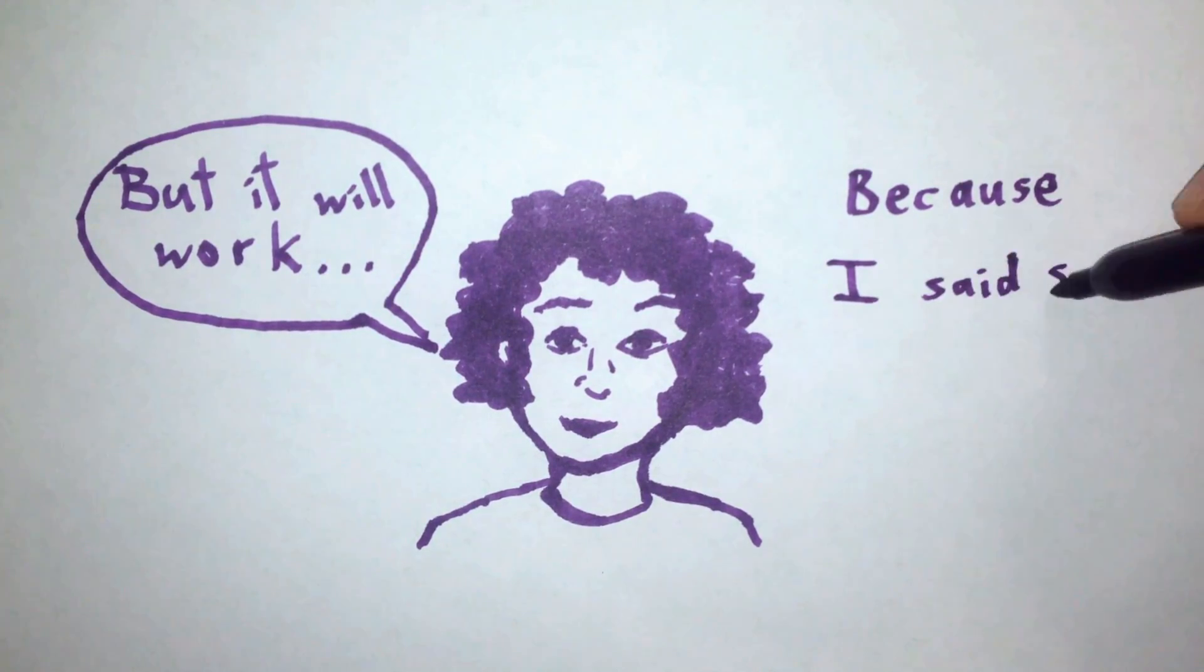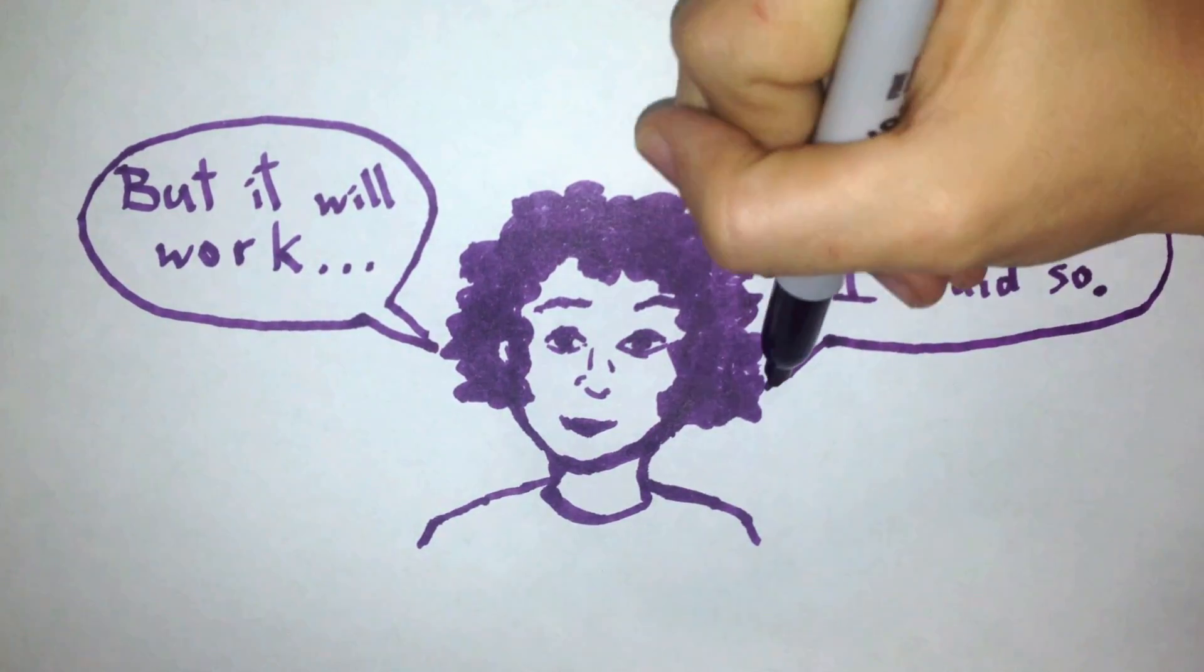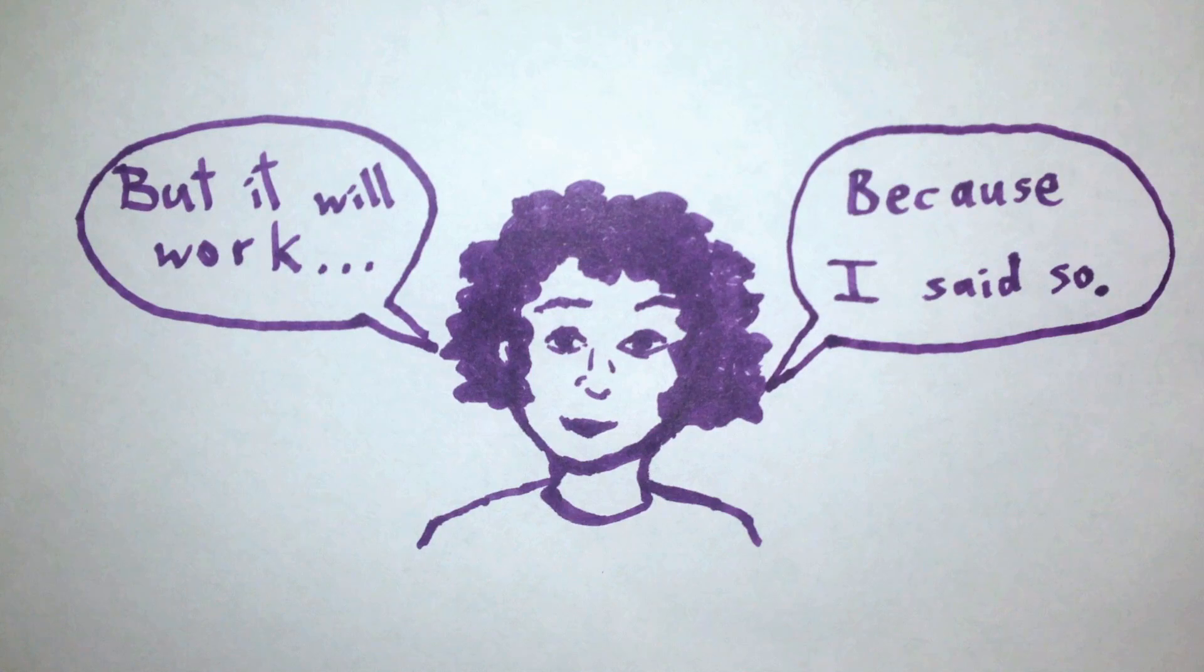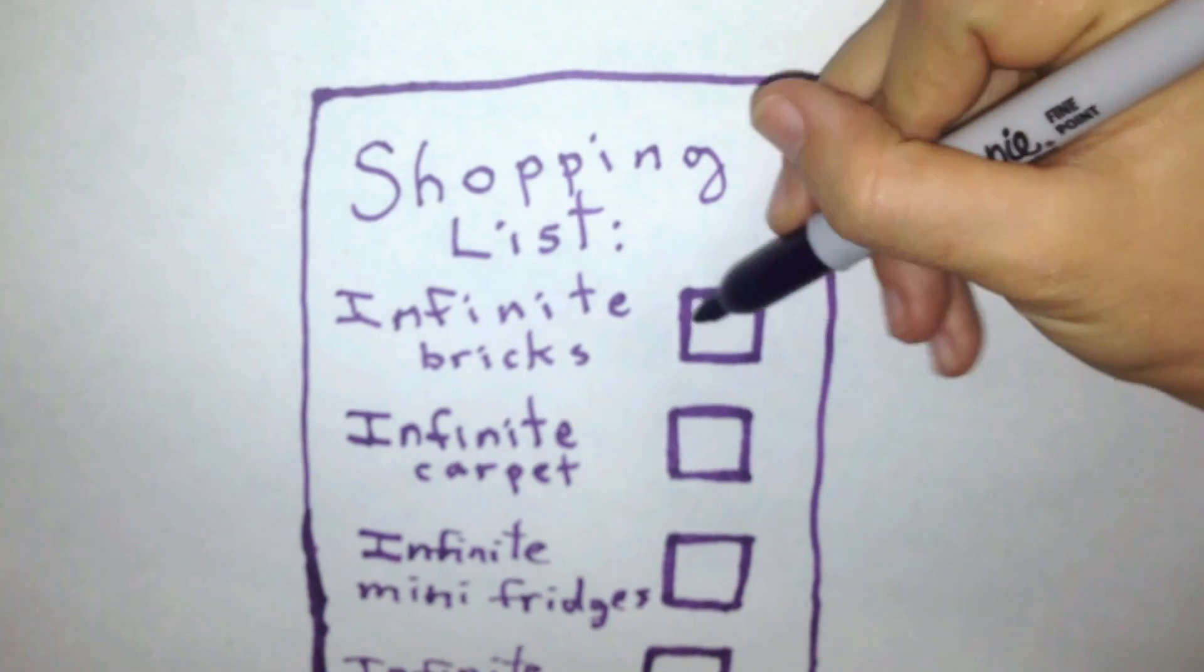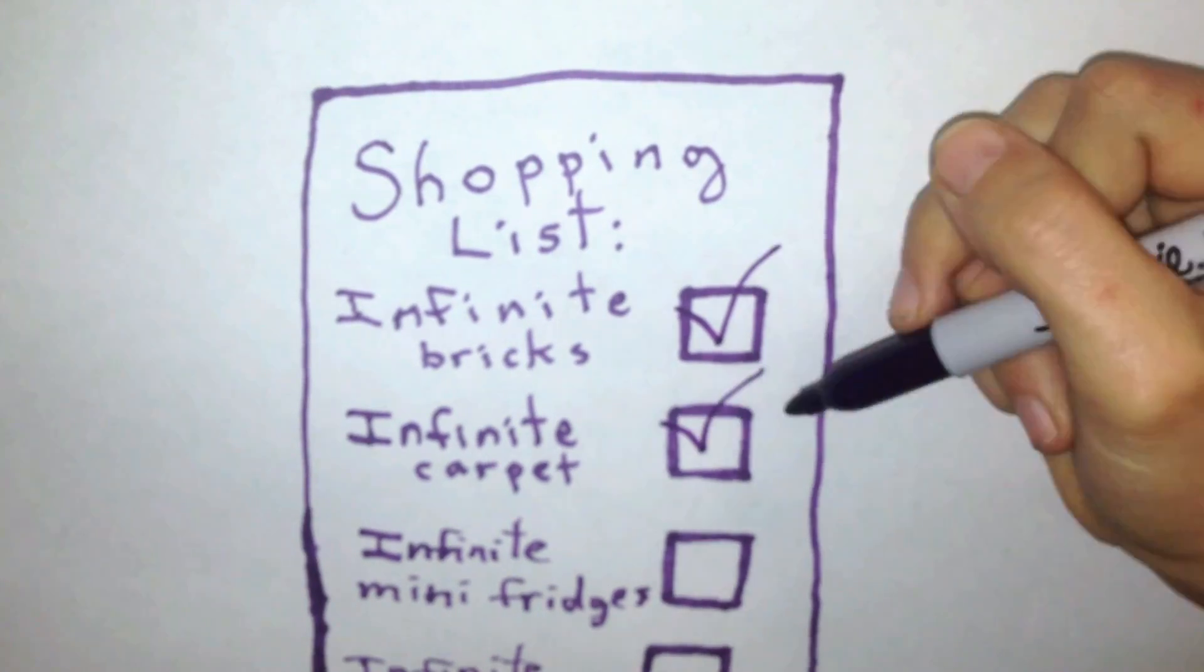And when we do math, we can make up whatever rules we want just to see what happens. So for the purposes of this riddle, suppose this hotel of yours exists in a universe in which it's possible to gather an infinite number of bricks and such.